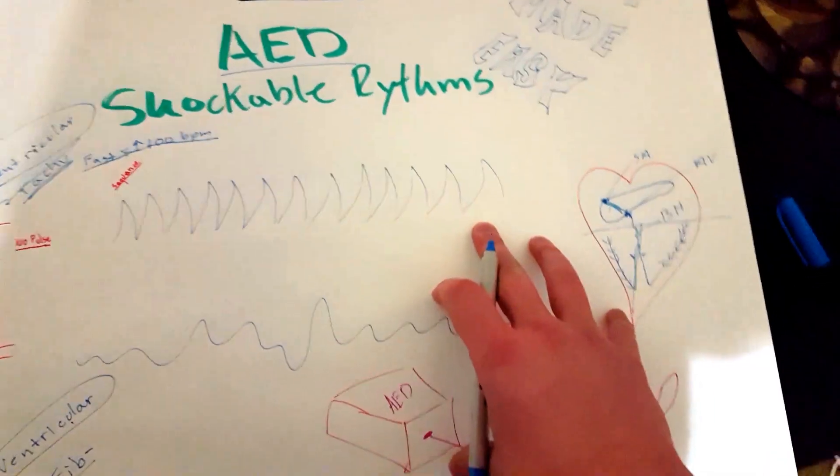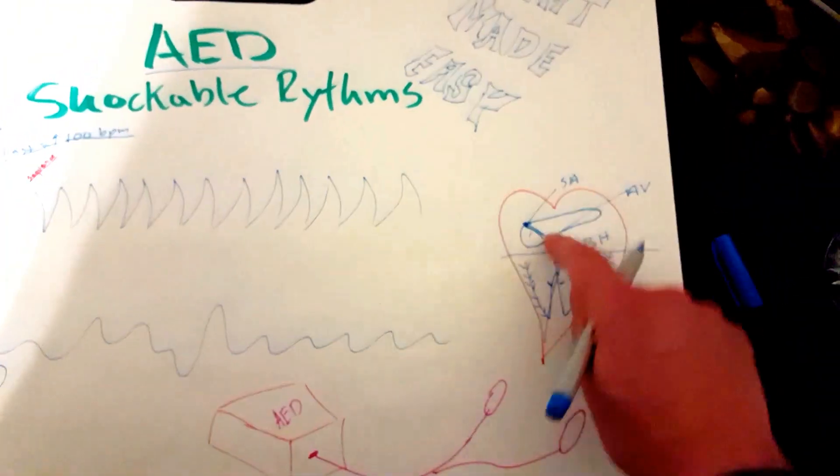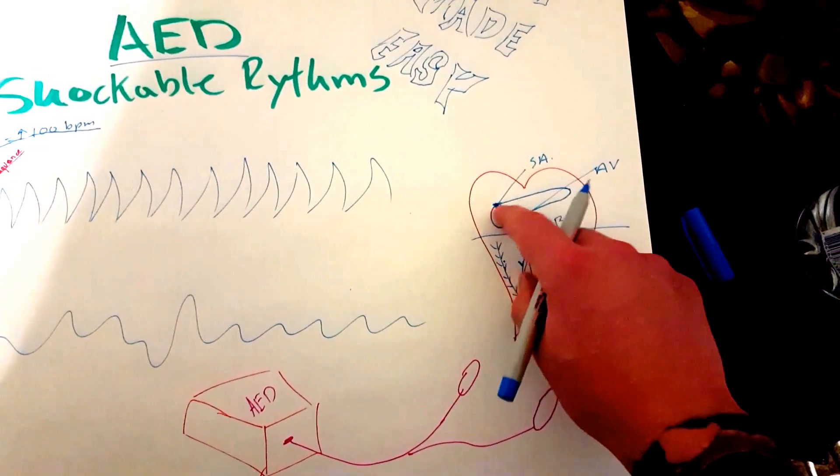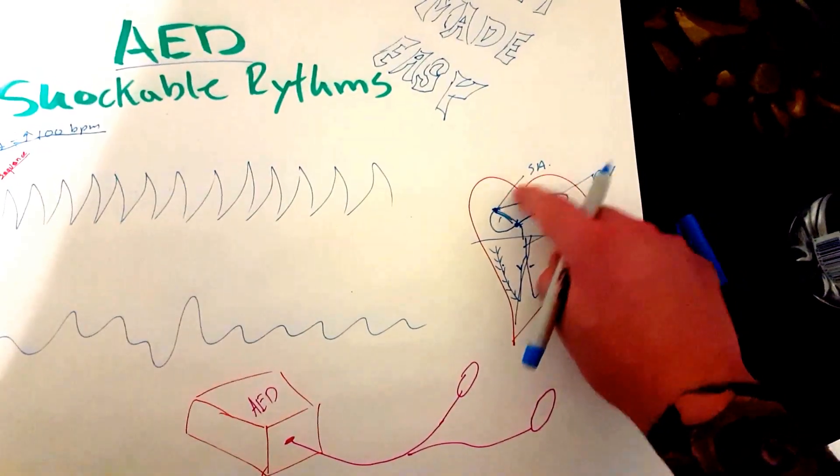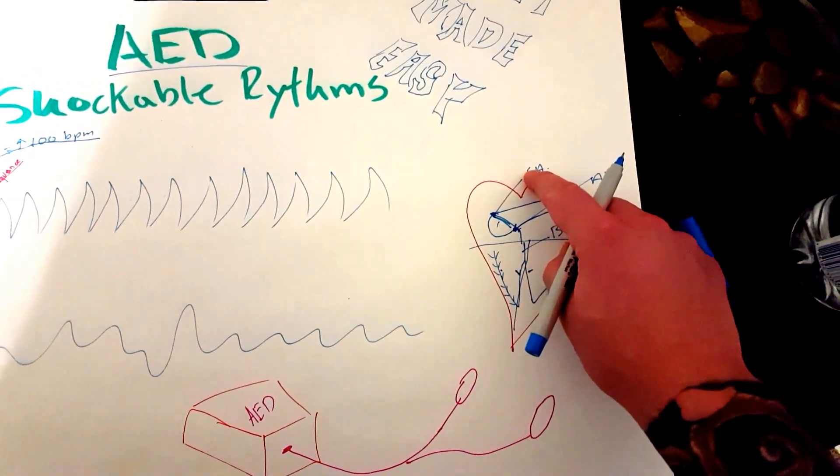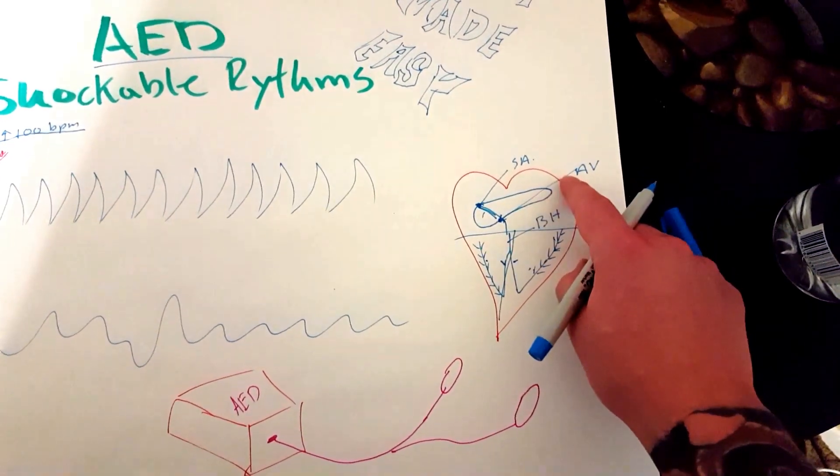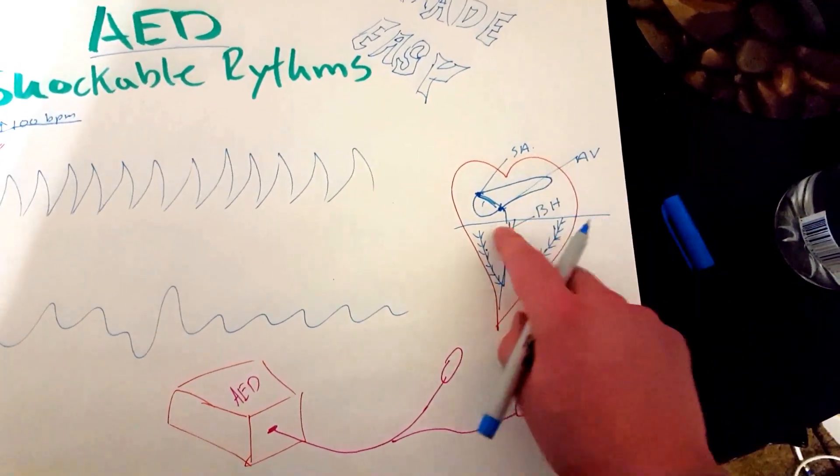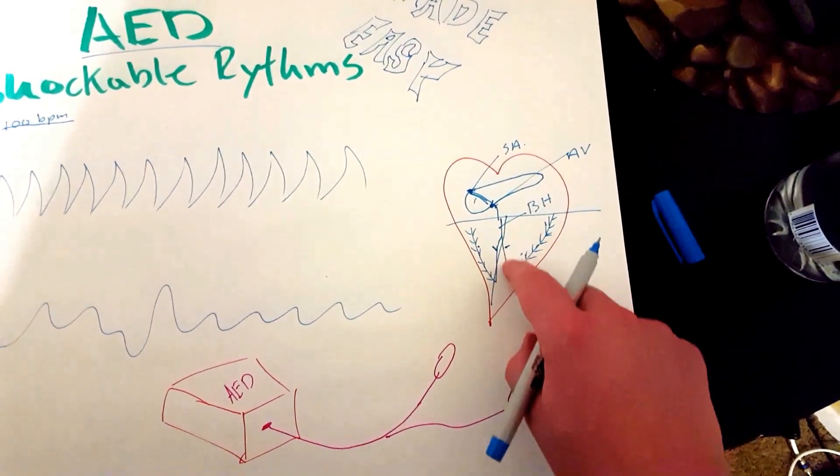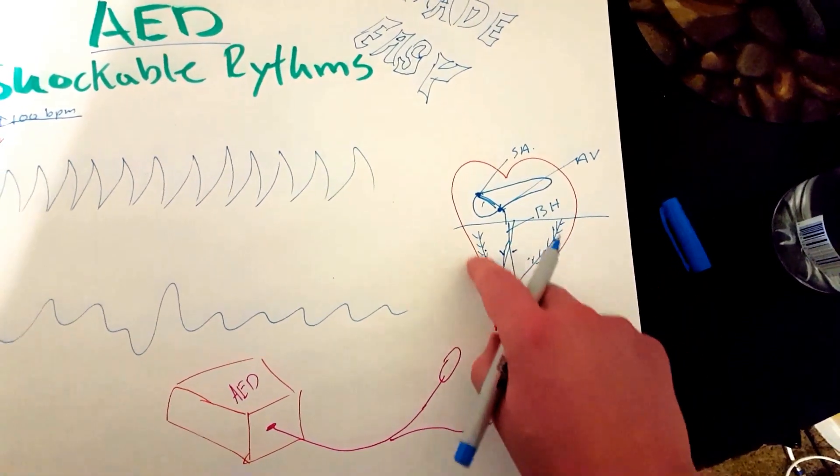So usually what happens with the conduction, the electricity in your heart, is that the signal is generated up here in the SA node, which is the sinoatrial node. Electricity is sent down to your AV node, your atrial ventricular node, then down to your bundle of His, bundle branches, and then to your Purkinje fibers.